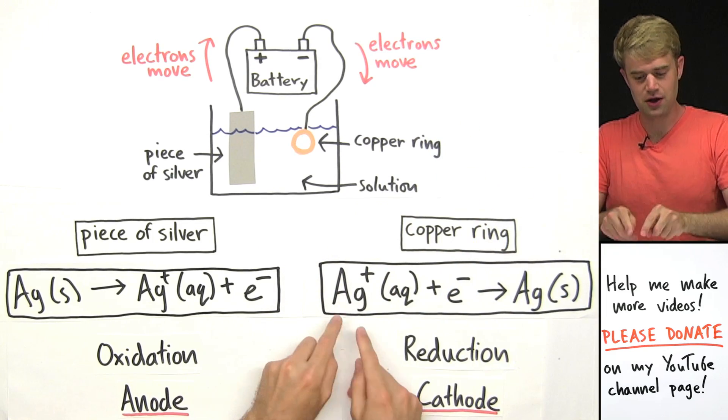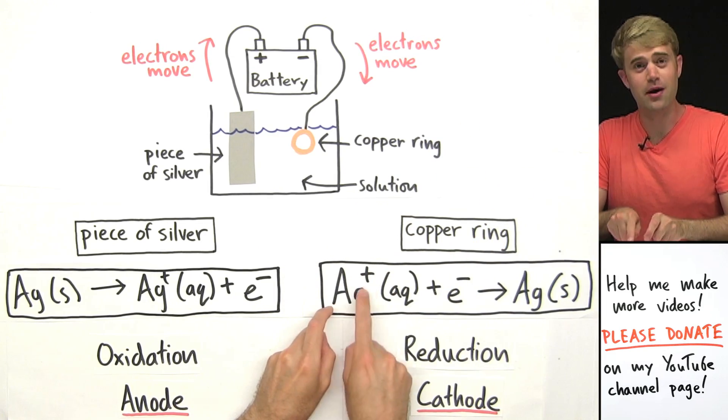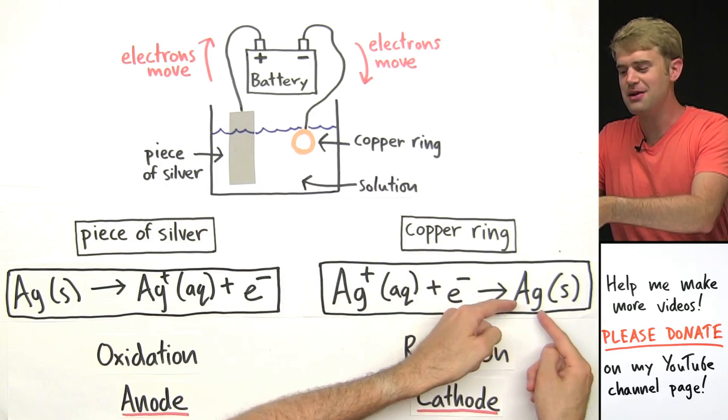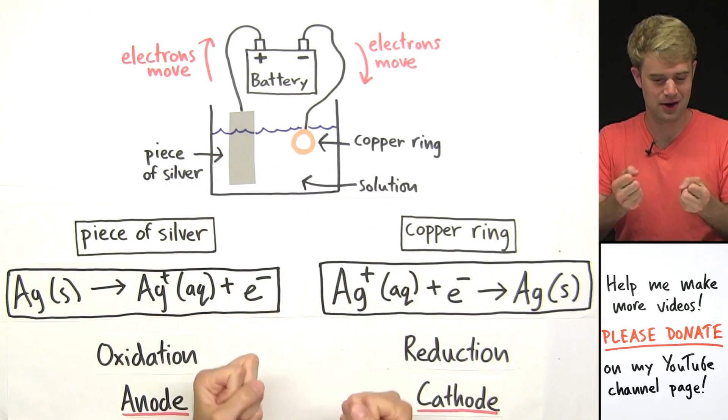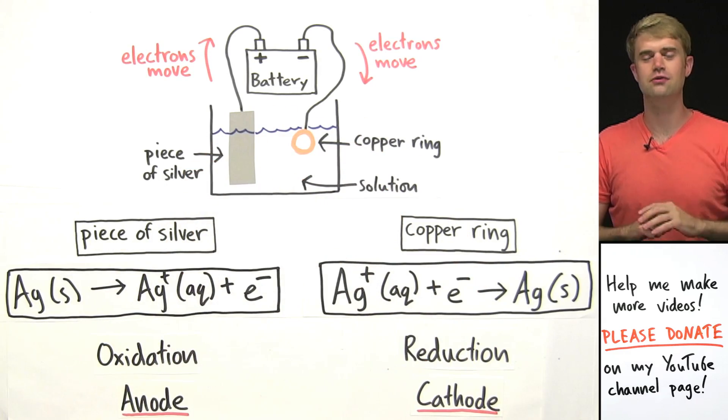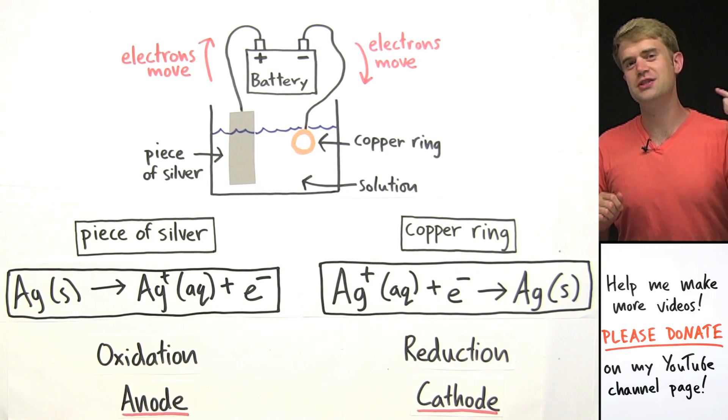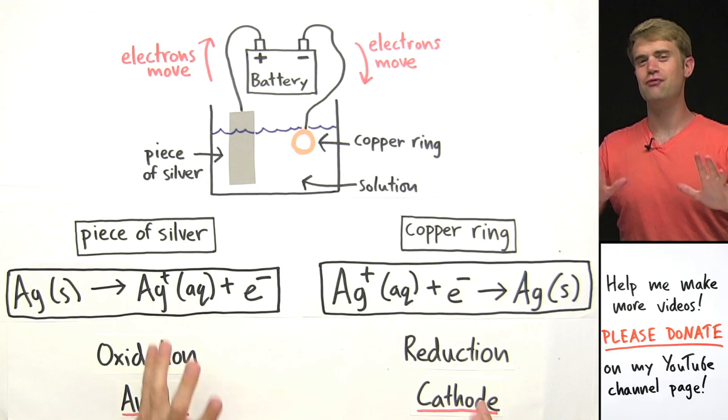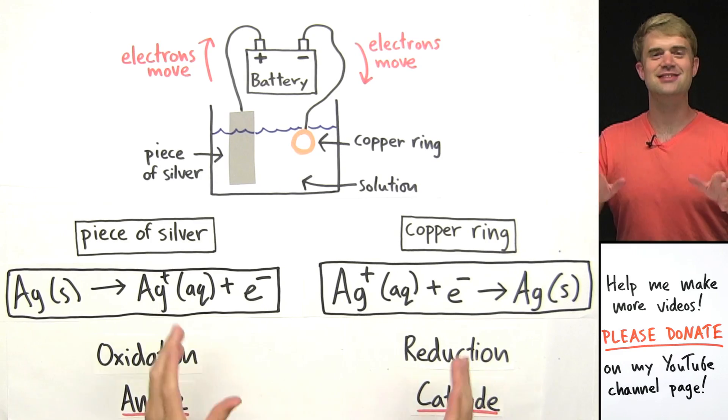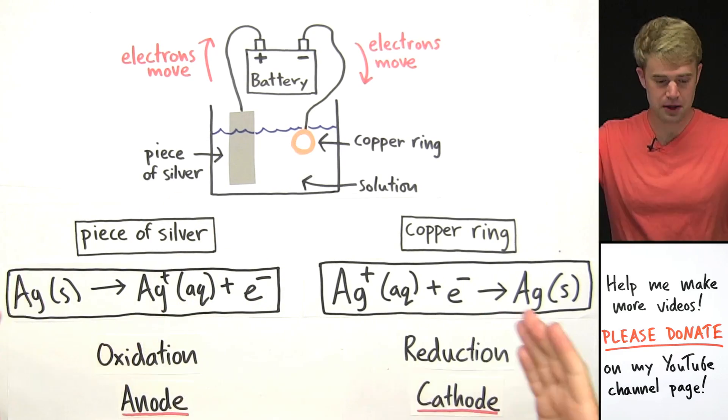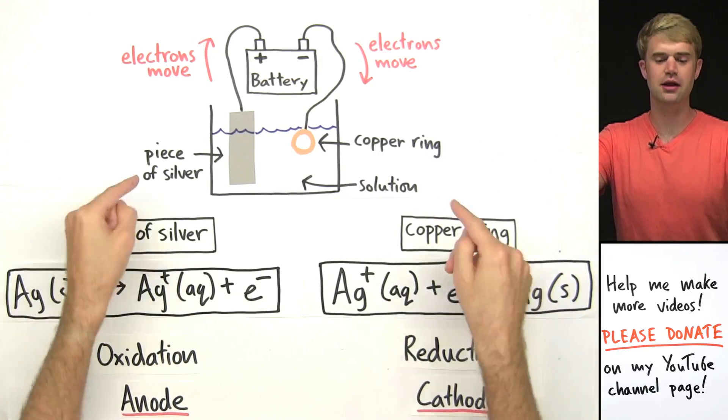Gaining those electrons turns the Ag1 plus ions that are dissolved in the solution, it turns them into solid silver metal, so they form a layer of solid silver on the copper ring. So, just remember, the next time you see a piece of gold or silver or platinum jewelry for sale for really cheap, chances are it is not solid precious metal all the way through, but it's been electroplated, just like this.